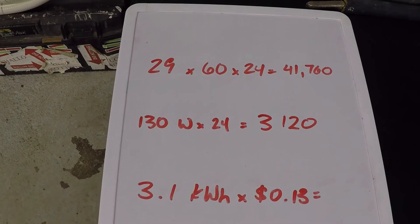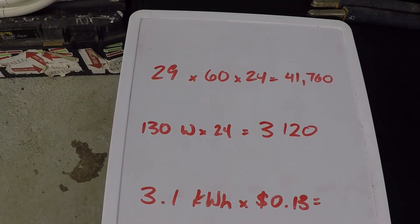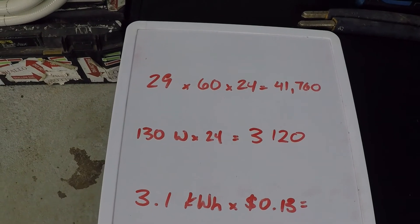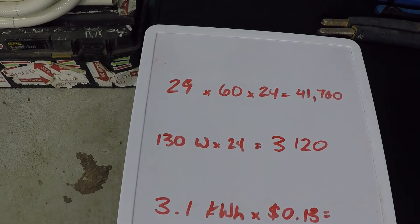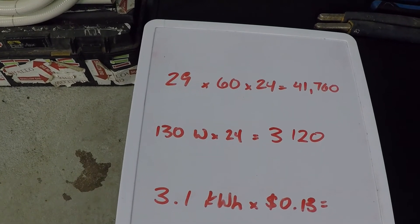So at 29 gallons per minute, 60 minutes in an hour, 24 hours in a day, that's just under 42,000 gallons of water that you would be able to filter in one day.